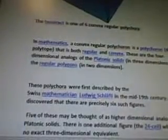In mathematics, the convex regular polychorion is a polychorion four-polytope that is both regular and convex. These are the four-dimensional analogs of the platonic solids in three dimensions and the regular polygons in two dimensions. These polychorion were first described by the Swiss mathematician Ludwig Schläfli in the mid-19th century. The Swiss Schläfli discovered that there are precisely six such figures.